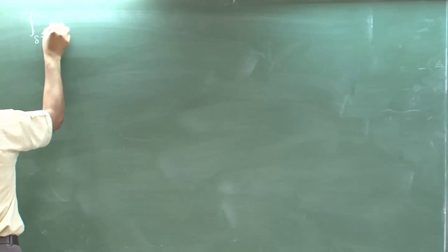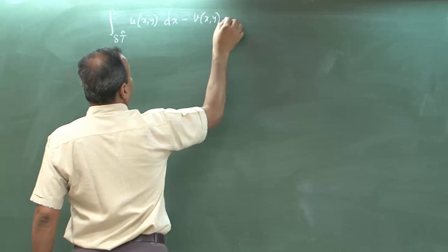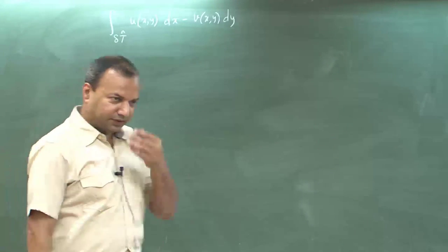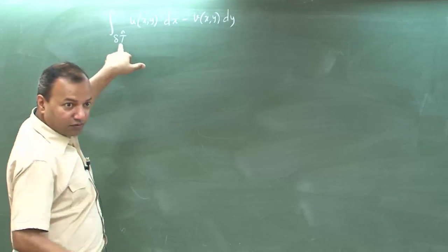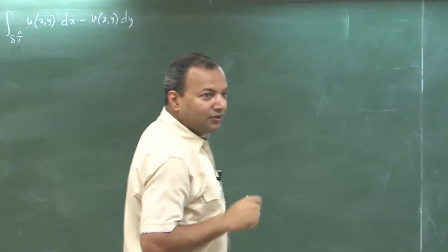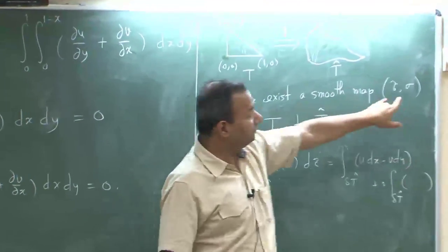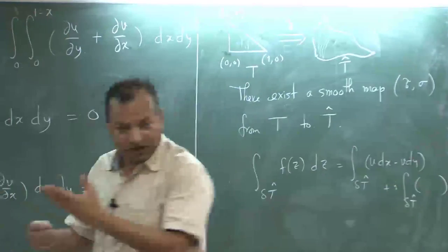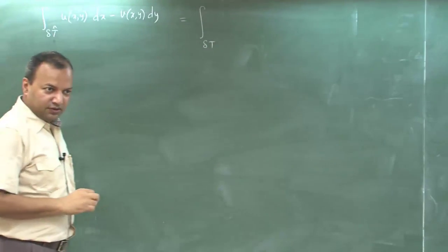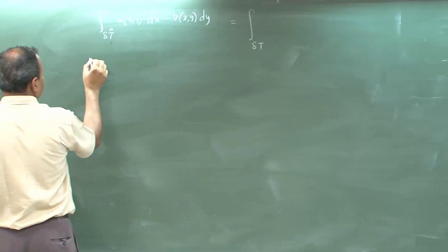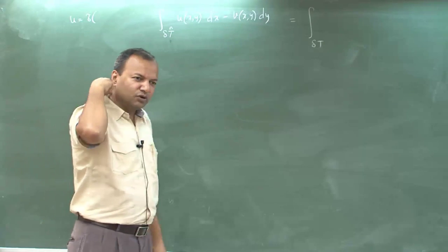So let us look at this integral. Since going through the corners, the boundary of T-hat is the same as going through the boundary of T, mapping everything using (τ, σ). I can rewrite this integral as running through the boundary of T. Before that, let us write that u is u(τ, σ), and introduce coordinates α and β.